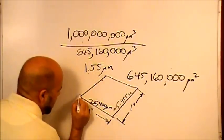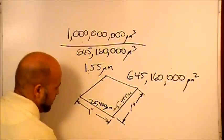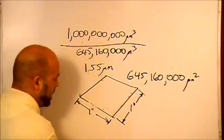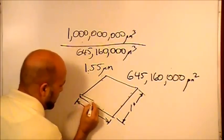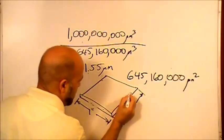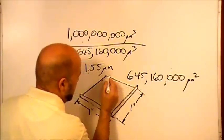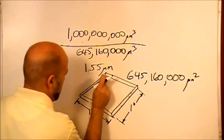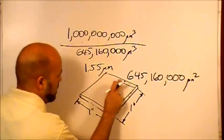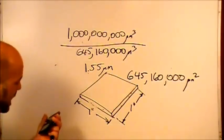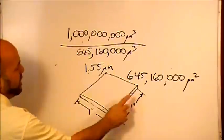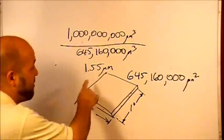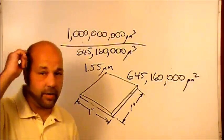So what does that mean? That means that the ink film, the theoretical ink film thickness... So now this thing, rather than just being one square inch, is a square inch and it's 1.55 microns thick. That's very thin.